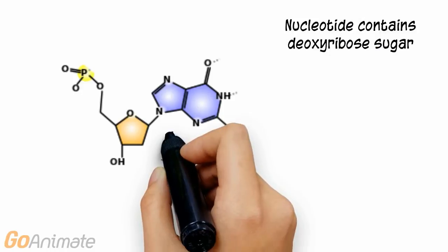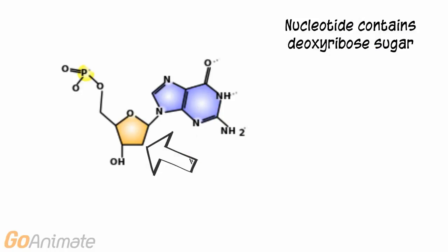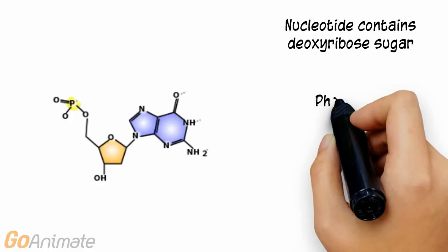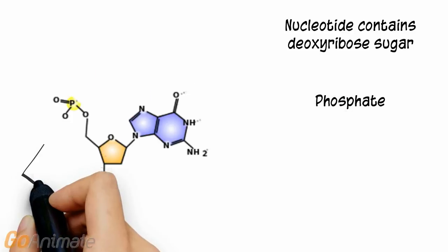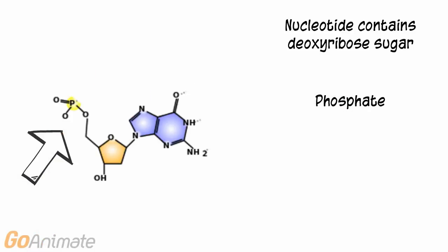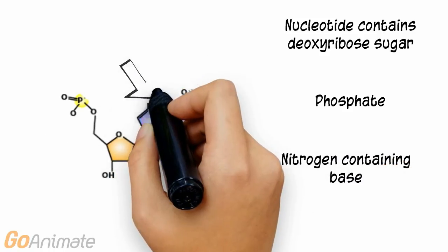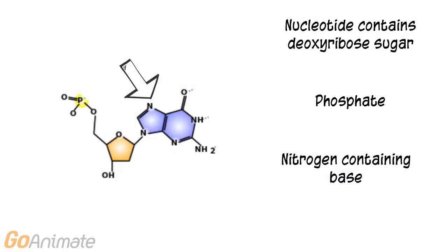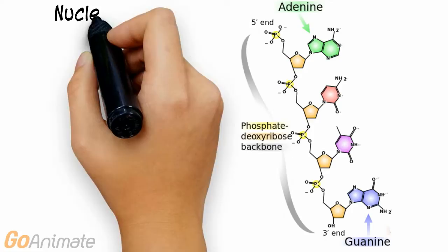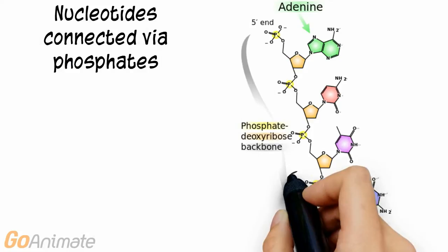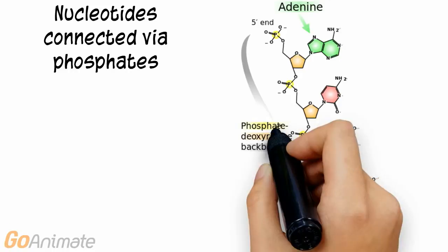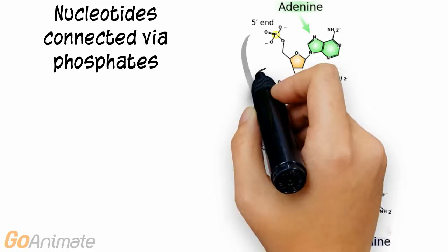Each nucleotide has three main parts. It contains a deoxyribose sugar, a phosphate, and a nitrogen-containing base. The nucleotides are connected together via the phosphates.